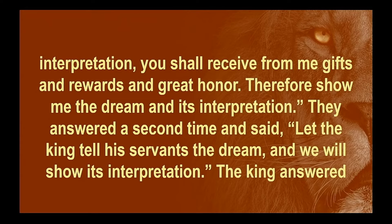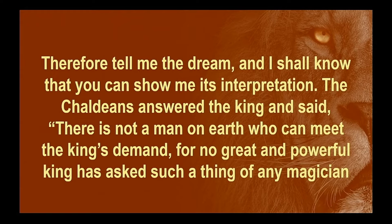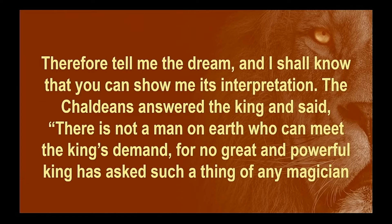The king answered and said to the Chaldeans, the word for me is firm. If you do not make known to me the dream and its interpretation, you shall be torn limb from limb, and your houses shall be laid in ruins. But if you show me the dream and its interpretation, you shall receive from me gifts and rewards and great honor. Therefore, show me the dream and its interpretation. They answered a second time, let the king tell his servants the dream, and we will show its interpretation. The king answered, I know with certainty that you are trying to gain time, because you see that the word from me is firm. If you do not make the dream known to me, there is but one sentence for you. You have agreed to speak lying and corrupt words before me till the times change. Therefore, tell me the dream, and I shall know that you can show me its interpretation. The Chaldeans answered the king, there is not a man on earth who can meet the king's demand. For no great and powerful king has asked such a thing of any magician or enchanter or Chaldean. The thing that the king asks is difficult, and no one can show it to the king except the gods whose dwelling is not with flesh. You may be seated.